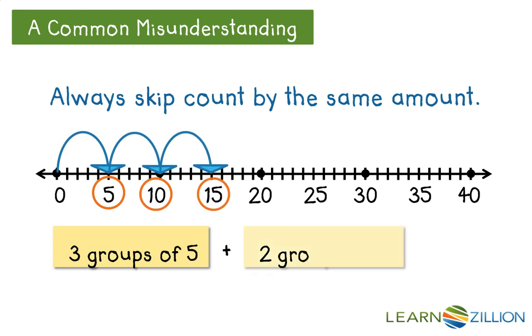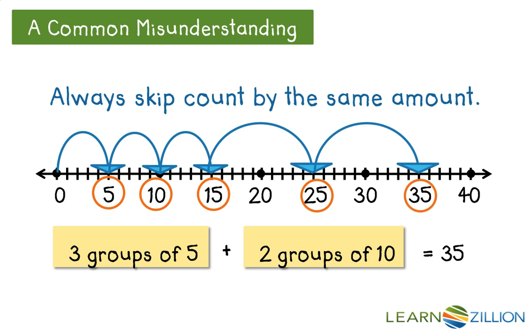And to those 3 groups of 5 we can add 2 groups of 10. So from 15 plus 10 more would be 25, and 10 more than that would be 35. So 3 groups of 5 plus 2 groups of 10 equals 35.